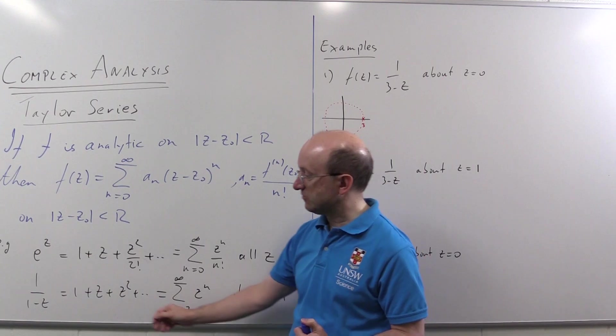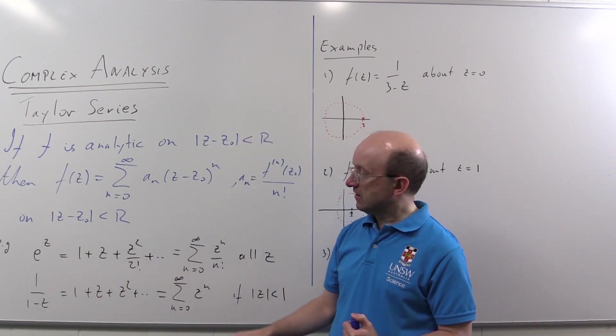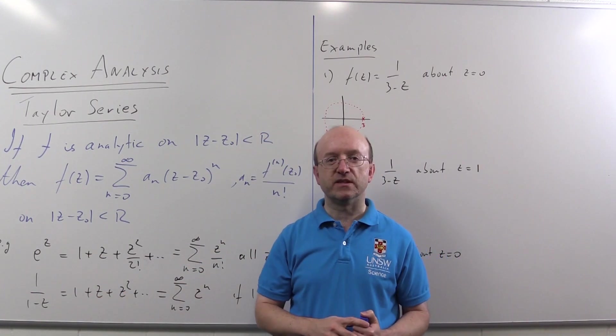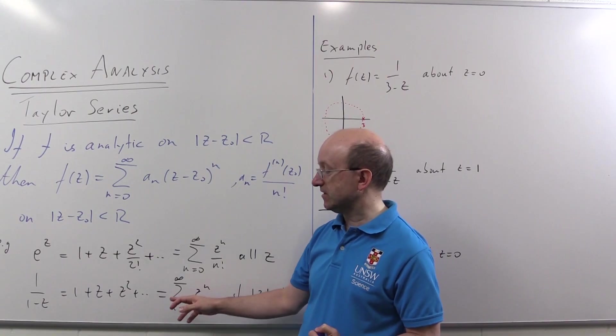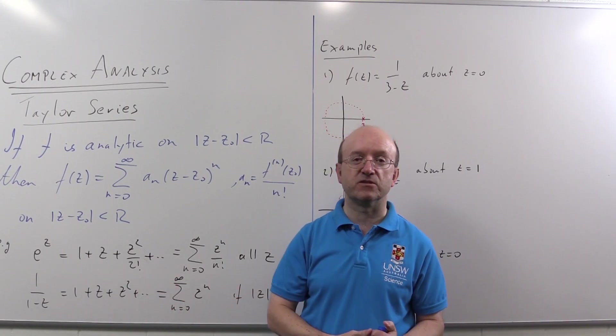Another one you might want to remember is one over one plus z, which you can just get from substituting z equals minus z in here. You get one minus z plus z squared and so on.